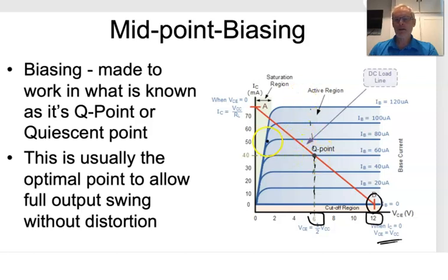Now this line here, this slope is determined by the supply rail that I choose and my RL resistor, the load resistor that's connected to the collector. So this point here, you can see, and that gives us our maximum current rating when the transistor is fully saturated.